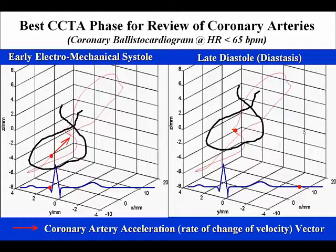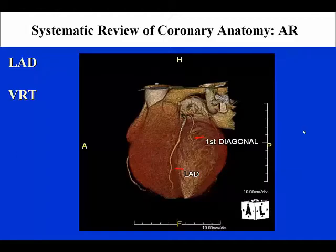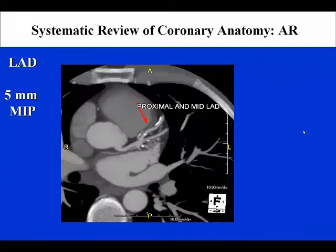Shown here are representative examples, beginning systematically with evaluation of the left main, showing it in the transaxial or foot view on the left and an anterior view on the right. You can see that the left main is normal. One can evaluate the left anterior descending using a variety of tools. This volume rendering demonstrates the length of the left anterior descending and a portion of the first diagonal branch. Shown here in a maximum intensity projection, we see the left anterior descending proximal and mid-segments, demonstrating eccentric coronary artery calcification in the LAD and in the first diagonal. These are eccentric and non-obstructive in nature.